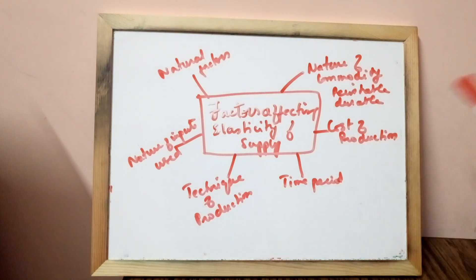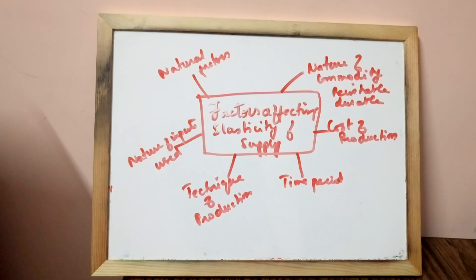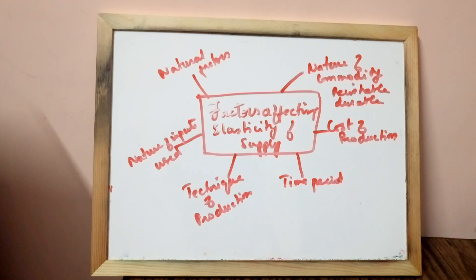Next one: cost of production. If cost of production rises rapidly with increase in output, then there is less incentive to raise the supply with increase in price. In such cases, supply will be inelastic. However, if cost of production increases slowly with rise in output, then supply will increase with rise in prices, and in that case supply will be more elastic.